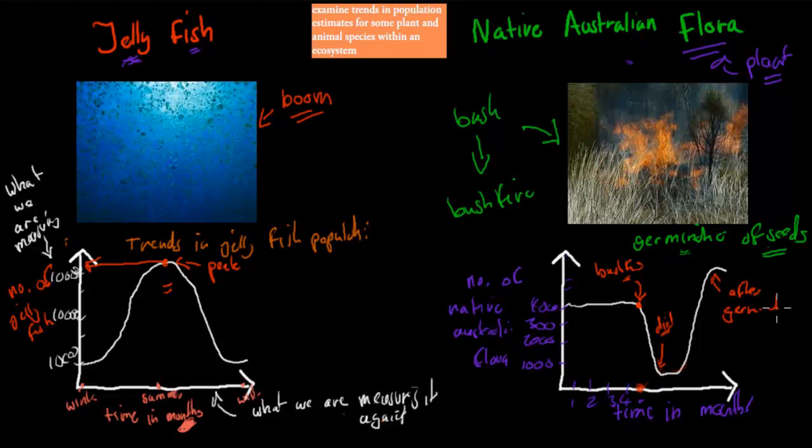So I'll go over the actual dot point. It says examine trends in population estimates for plants and animal species within the ecosystem. So in your actual class, you might study different ones. But the main idea is just to know that you're looking at what happens over time in terms of the numbers of these different plants or different animals. So sometimes they'll be going up. And then for whatever reason, and you should know that reason, whatever their reason is, they might be going down more than usual or up more than usual. And that's the crunch point, the reason why they're actually going up and down. I hope that was useful.